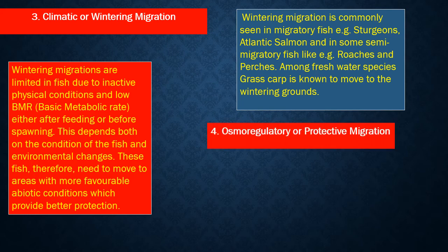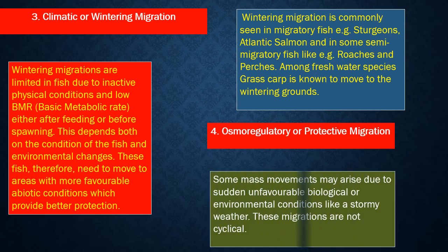Osmoregulatory or protective migration. Some mass movements may arise due to sudden unfavorable biological or environmental conditions like stormy weather. These migrations are not cyclical.